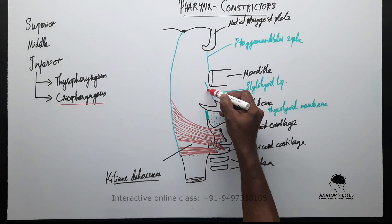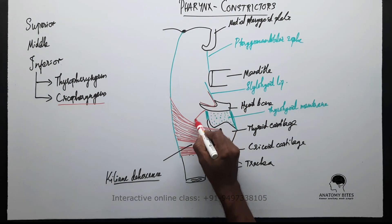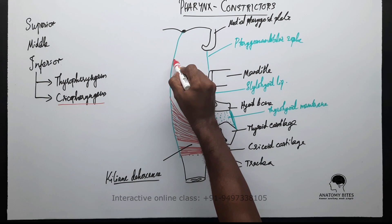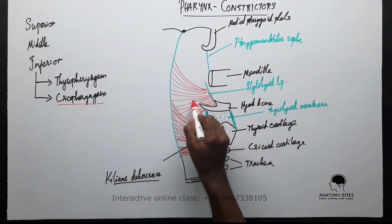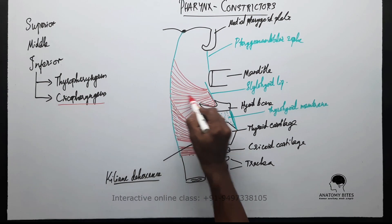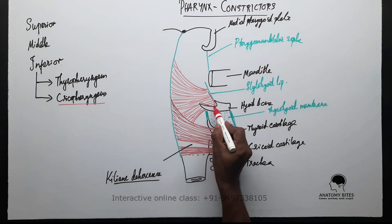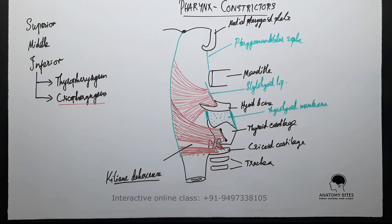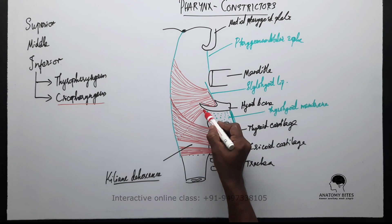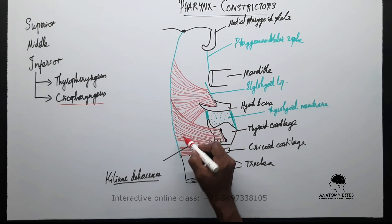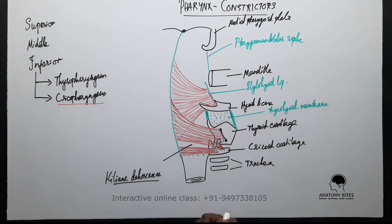The middle constrictor arises from the lower end of the stylohyoid ligament, the lesser horn of the hyoid bone, as well as from the greater horn of the hyoid bone. The fibers fan downwards and upwards, then fan out backwards and are inserted into the pharyngeal raphe. The upper border of the thyropharyngeus overlaps the middle constrictor, and the middle constrictor does not extend beyond the level of Killian's dehiscence — that is why that part is not reinforced by multiple layers of muscle.